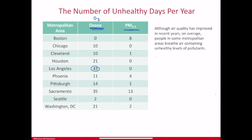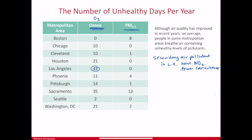Ozone is a secondary air pollutant, produced from primary air pollutants. In LA, we have a lot of NO2 from cars — this is from car exhaust. Even though there are regulated and electric cars, we just have a lot of people and a lot of cars. This NO2 plus sunlight generates ozone as a secondary air pollutant. Without NO2, if we got rid of all the cars and only had the sun, we actually wouldn't have any of the ozone.